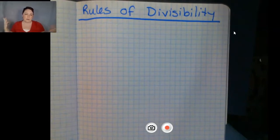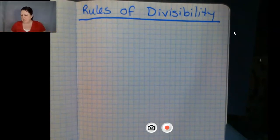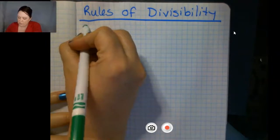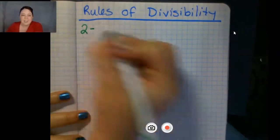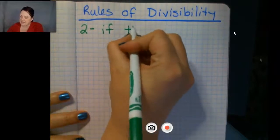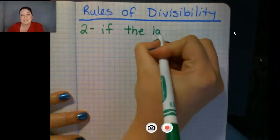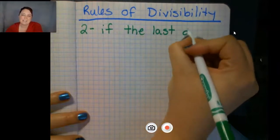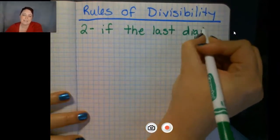So we're going to start. Well, everything's divisible by one. So one, we don't do. We start with two. So the rule for two is if the last digit is even.